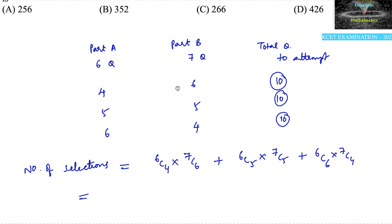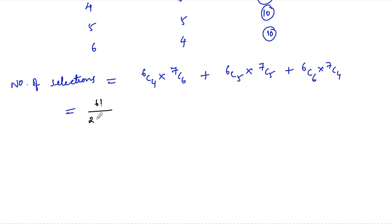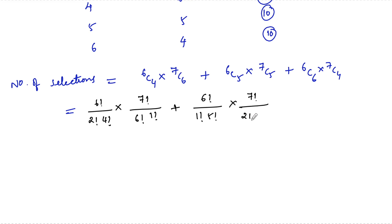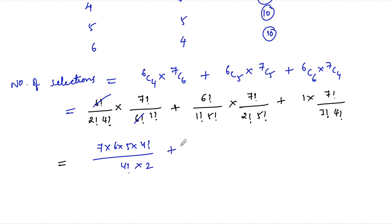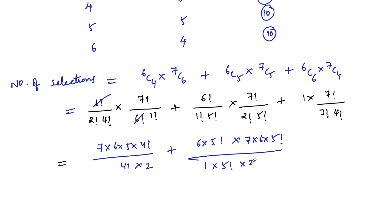Simplifying: 6C4 into 7C6 equals 6! over (2! × 4!) multiplied by 7! over (1! × 6!), plus 6C5 which is 6! over (1! × 5!) multiplied by 7! over (2! × 5!), plus 6C6 which equals 1, multiplied by 7C4 which is 7! over (4! × 3!). We can cancel common factorial terms.